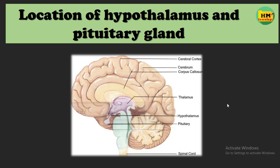We will start by talking about the location of the hypothalamus and the pituitary gland. The hypothalamus is located in the brain, specifically in the diencephalon part of the brain. The diencephalon has many parts like the epithalamus, metathalamus, thalamus, and the subthalamus. In this figure, the diencephalon is shown in the violet color.